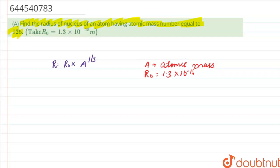So let us start this question. So basically we have been given r. So basically r is equal to r0 that is 1.3 into 10 raised to power minus 15 into a. a is 125 and it will be raised to the power 1 by 3.